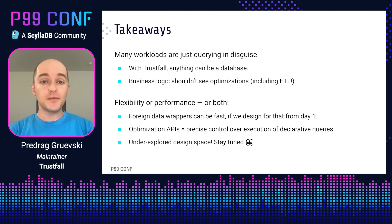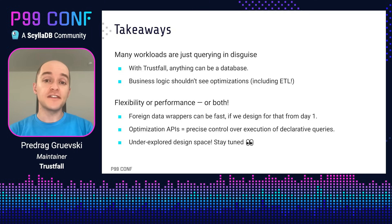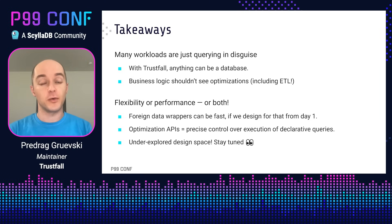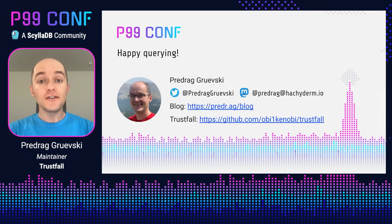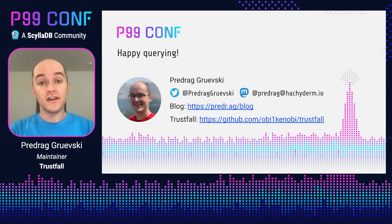The second takeaway is that we don't have to pick between flexibility or performance — we can have both at the same time. Foreign data wrappers can be quite fast if we design for that from day one. And having access to good optimization APIs means that we have precise control over the execution of our declarative queries. I believe this is an underexplored design space, so stay tuned. You can follow me on social media, and I also have a blog you might want to check out. Please play around with the TrustFall query engine and let me know what you think. Happy querying!